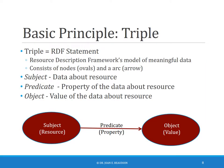The basic principle behind linked data and the semantic web is what's known as a triple. A triple is also known as an RDF statement. RDF stands for Resource Description Framework, and it's RDF's model of meaningful data — it's how you make data more meaningful. It consists of nodes, which are the ovals, and an arc, which is the arrow. Sometimes the arc will be straight, sometimes curved, sometimes S-shaped. Nodes are the circles and the arcs are the lines between the circles.